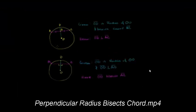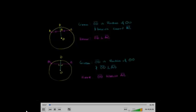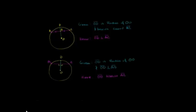In a previous video, we've already shown that if we have some circle centered at O, and OD is a radius that bisects chord AC — so bisects means it's split it in two, that AB is equal to BC — we've proven that OD will be perpendicular to AC. If you want to look it up, do a search on Khan Academy for 'radius is perpendicular to chord' and you'll hopefully find the proof of that.